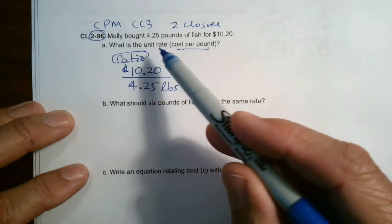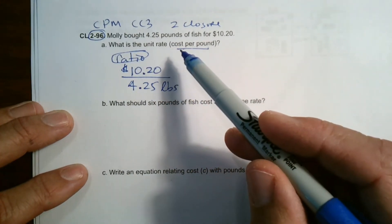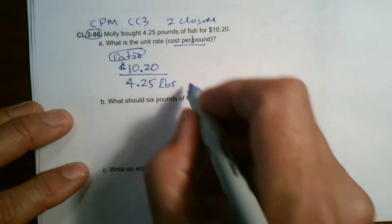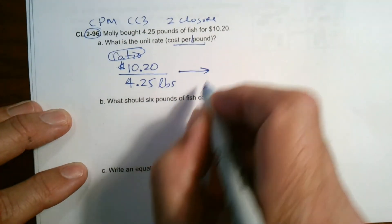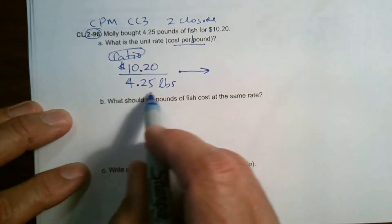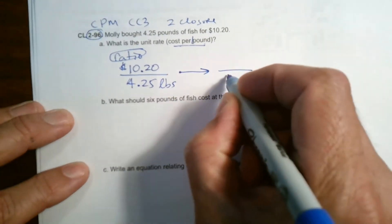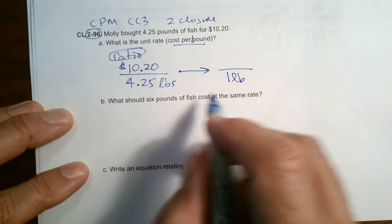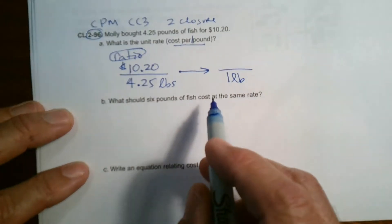Now I need to do the unit rate though. Unit rate is cost per what? One pound, right? So the thing is, I've got to get this fraction, this is just a fraction, a ratio is a fraction. How do I convert a fraction to have on the denominator a one? I want one pound in the denominator. That's a unit rate, to have one in the denominator.